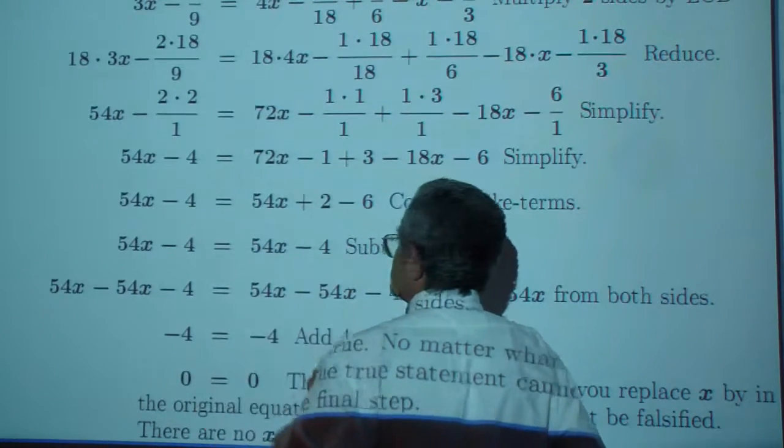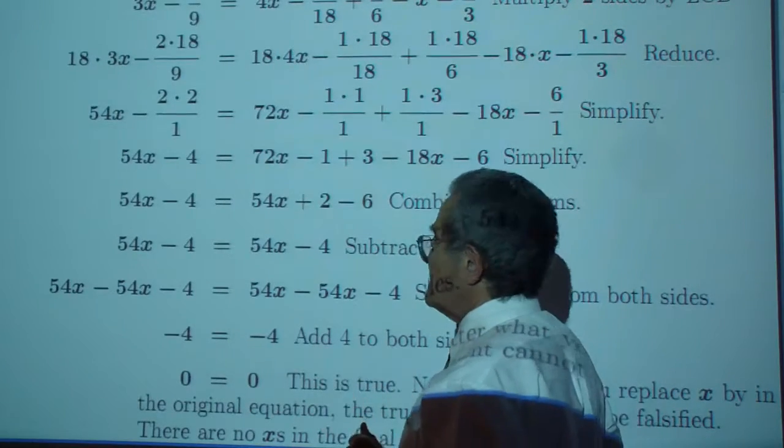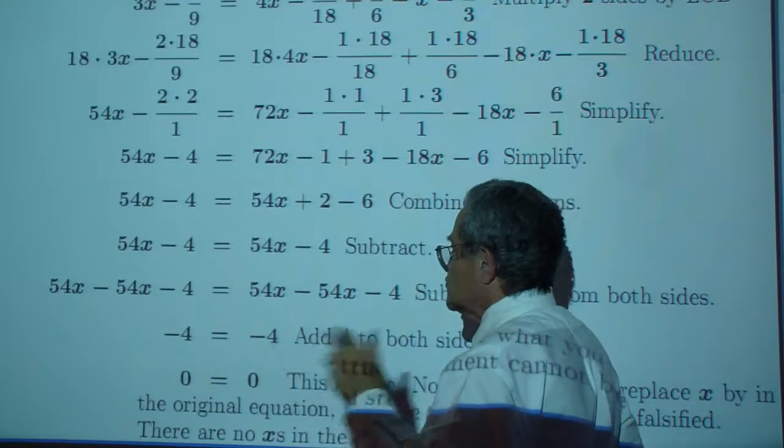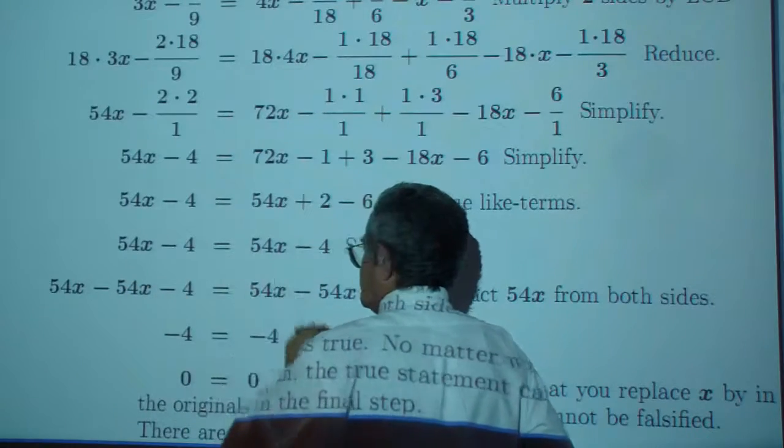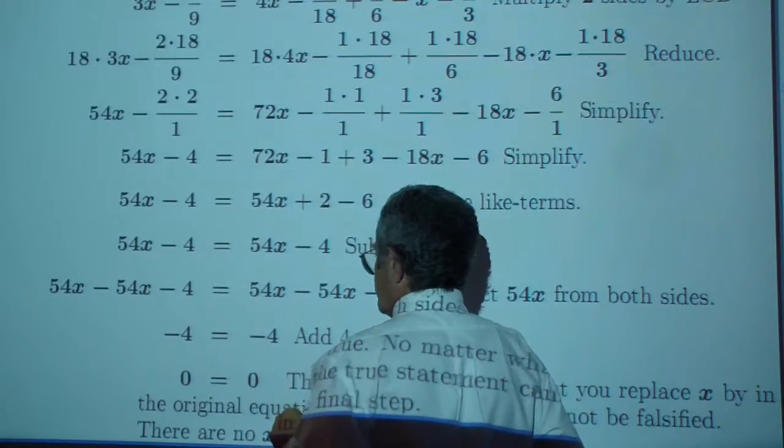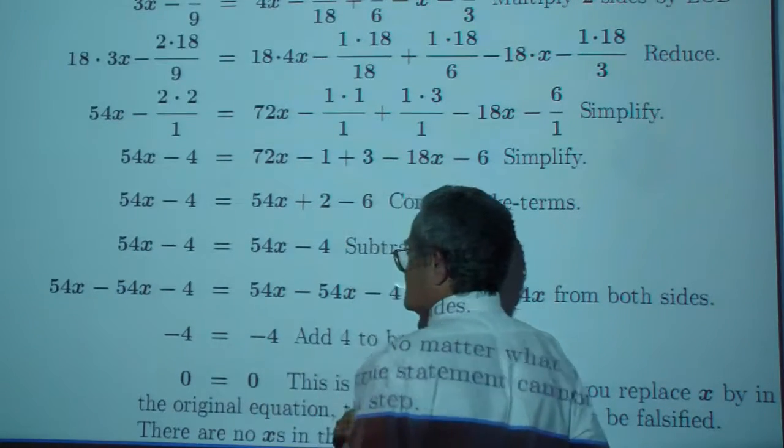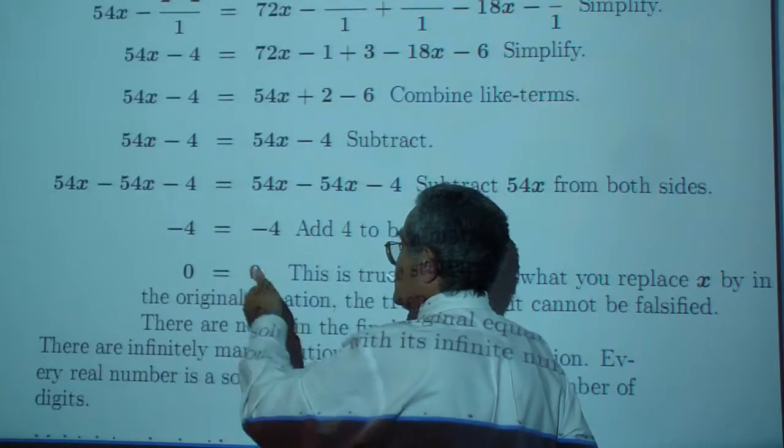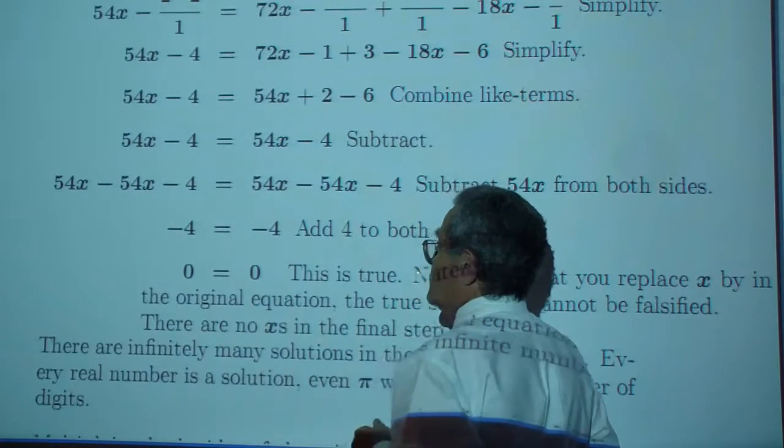You have the same quantity on the left as on the right. There are infinitely many solutions. You could continue. You could subtract 54x on both sides. You could add 4 to both sides. The constants become 0 equals 0, just like negative 4 is negative 4.